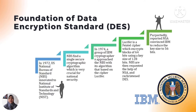In 1974, a group of IBM cryptographers approached the NBS with an algorithm based on the Lucifer cipher. Lucifer is a block cipher which encrypts blocks of 64 bits using a key size of 128 bits. NBS requested the help of NSA, who later helped with alterations to the encryption and redesigned the DES. It was reportedly said that NSA convinced IBM to reduce the key size to 56 bits, which made the cipher more vulnerable to brute force attacks.